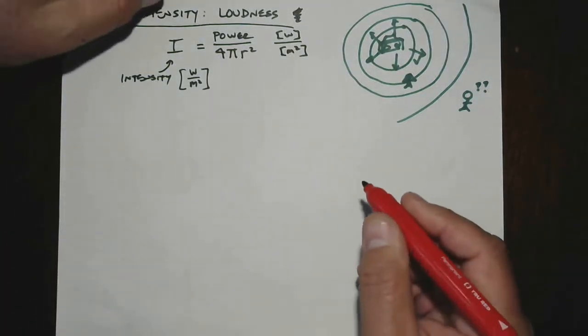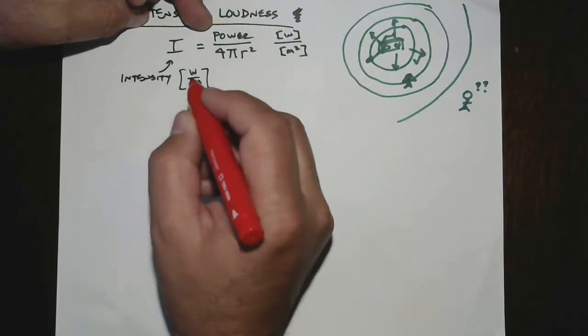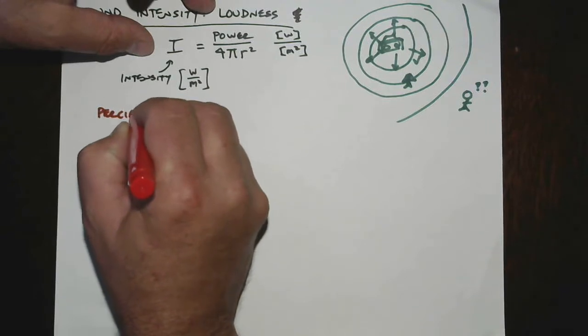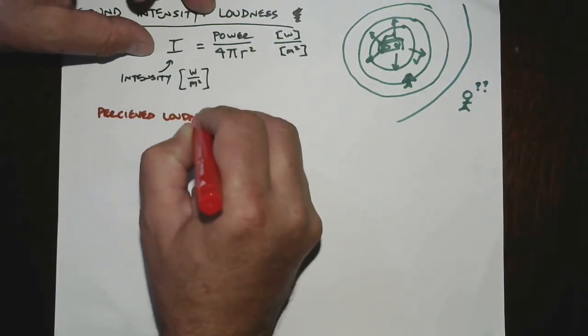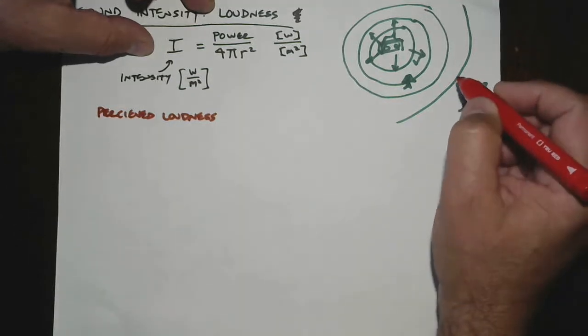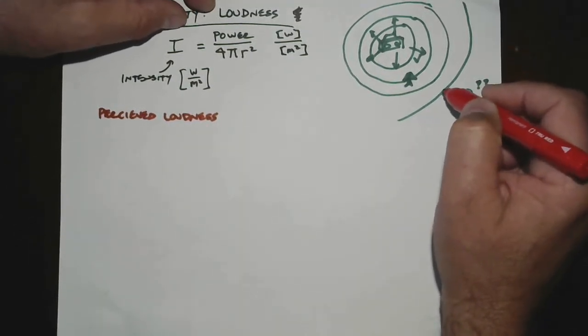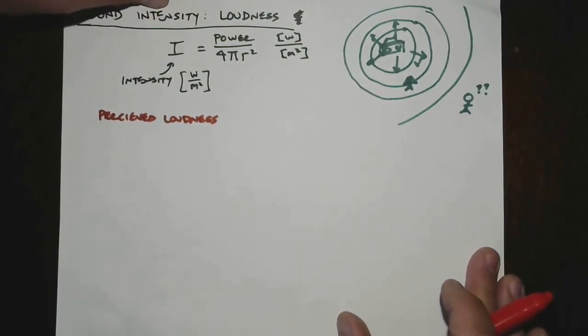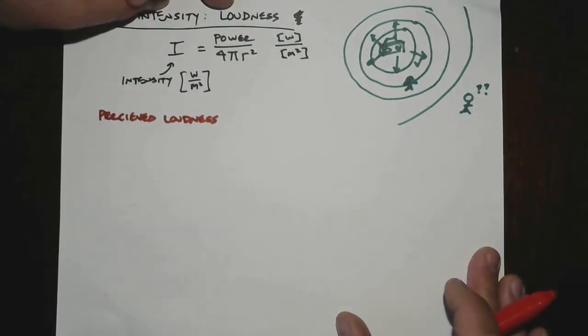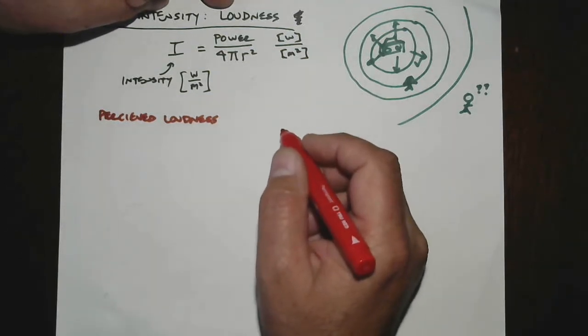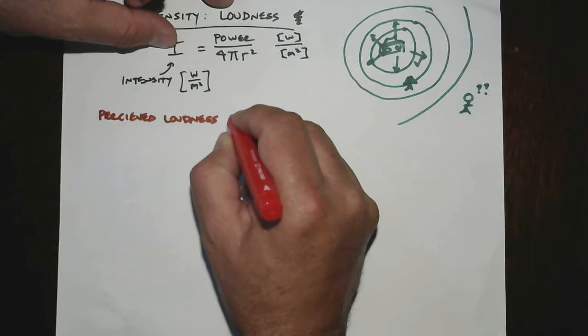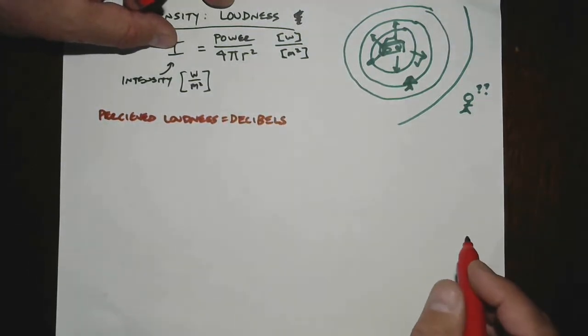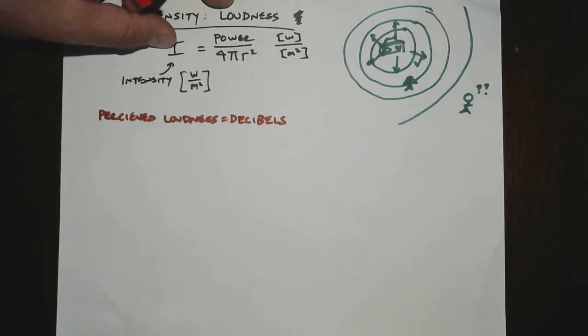But there's another thing that I wanted to bring up, and that is the perceived loudness. Perceived loudness has everything to do with how intense the sound is, but also your ears are not completely linear in their response. They respond to louder sounds not quite as well as they do to quieter sounds. Your ears are an amazing organ in your body. Perceived loudness is measured in decibels. You may have heard this before. I thought I would give you a little bit on decibels here.